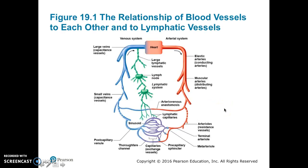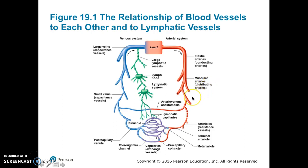Figure 19.01 illustrates the relationship of the different vessels to each other. Up here is the heart. Going away from the heart — remember, 'a' is for artery and away — that is the arterial system. Generally, the vessel diameter decreases the further away from the heart it is, until we reach the capillaries at the bottom. Immediately after the heart, the arteries are elastic or conducting arteries. After the elastic arteries come the muscular arteries, or distributing arteries. Sometimes there is an arteriovenous anastomosis — a direct connection from the artery to the vein with no capillary involvement.